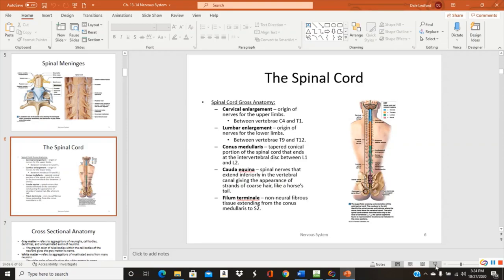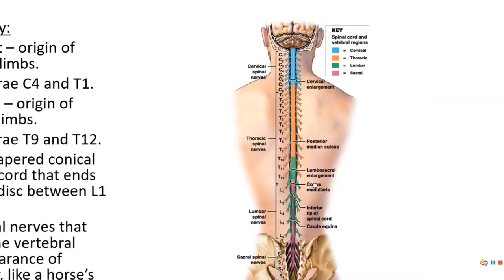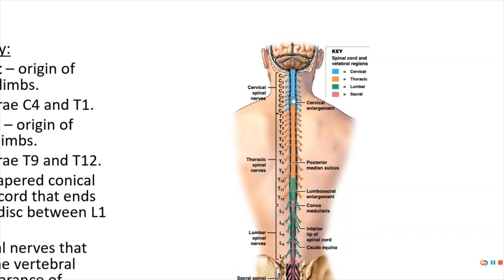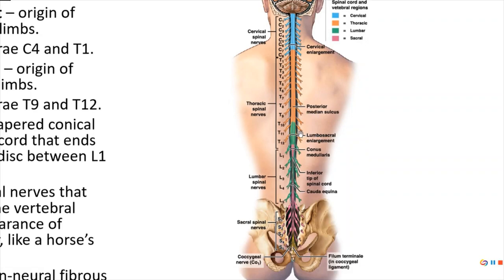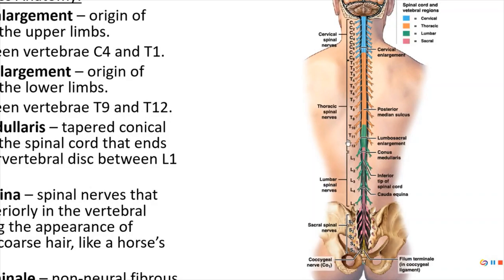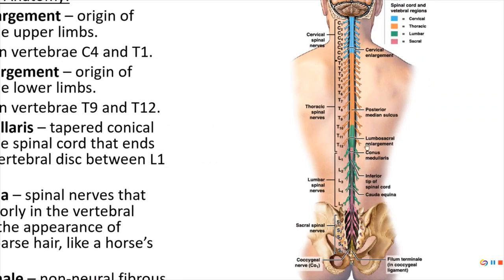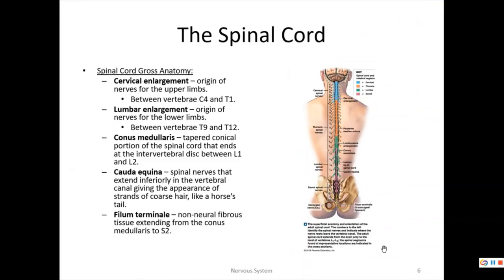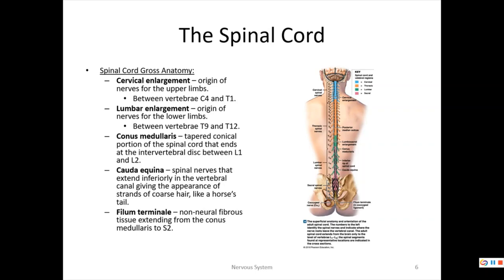The filum terminale extends from the conus medullaris down to the S2 vertebral level where it attaches to the sacrum. It is a pia mater string that helps stabilize the spinal cord. Looking at the diagram: we can see the cervical enlargement, the lumbosacral enlargement, the conus medullaris ending in the thoracic area, the cauda equina going all the way down, and the filum terminale ending at S2.